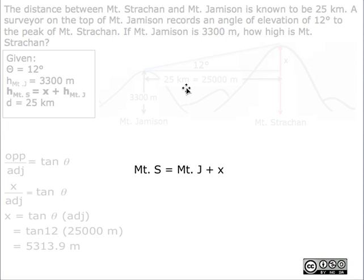After we solve for x, which is the top portion of Mount Strachan, we need to solve for the entire height. The equation we use is Mount Jameson plus x, giving us 3,300 meters plus 5,313.9 meters. Together, it adds up to 8,613.9 meters, which we put into scientific notation as 8.6 times 10 to the power of 3 meters because of sig figs.